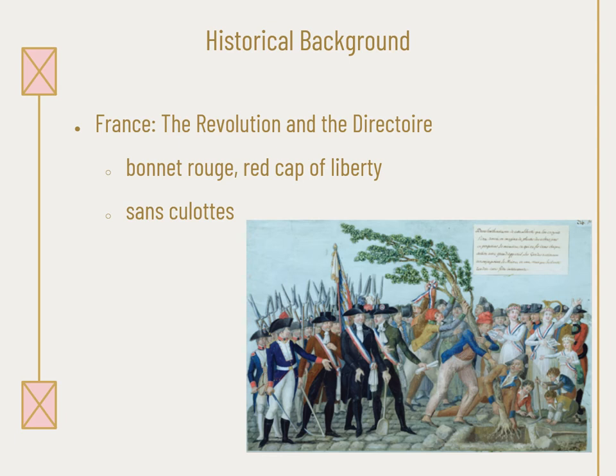Now for the French Revolution. Why did it happen? Social, political, and economic grievances — high unemployment, high prices, a bankrupt government — made France ripe for revolution, not to mention the ineffectiveness of the monarchy.